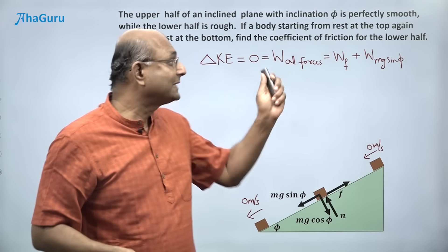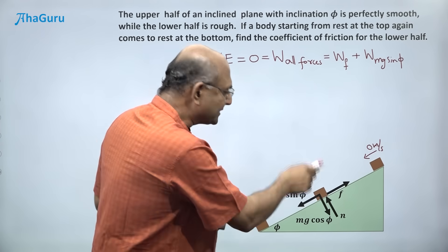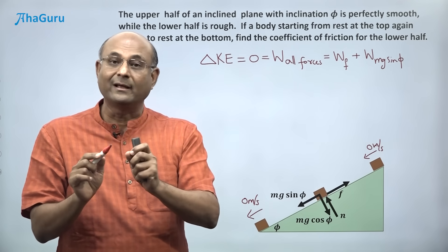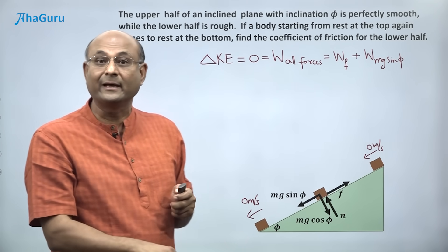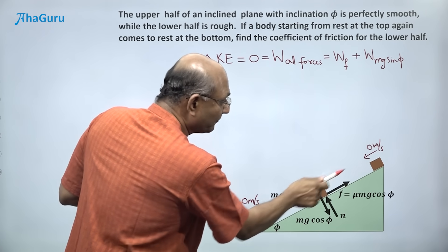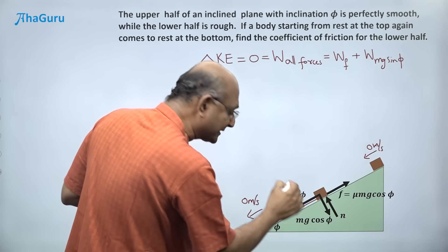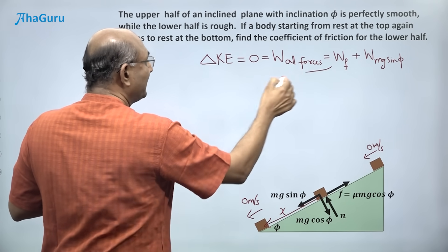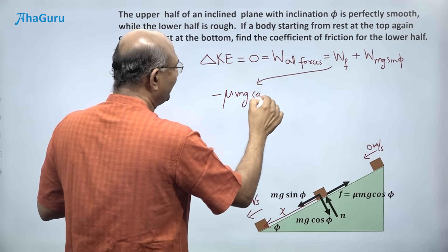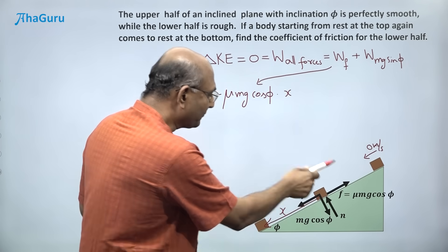Let us think about friction. What is the value of friction? Friction, because it's sliding, must be equal to mu times N. But N is equal to mg cos phi, so friction must be mu mg cos phi. What is the work done by friction? Mu mg cos phi and the displacement is in the opposite direction. Let's call it x. So the work done by friction is minus mu mg cos phi into x. Why minus? Because the friction force and the displacement are in opposite directions.